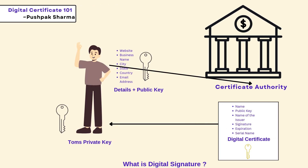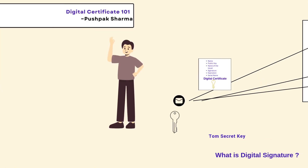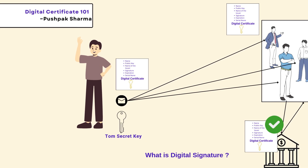Tom obtains a digital certificate by sending information like his IP address and business name to a certificate authority. After verifying the details, the authority issues the digital certificate, which Tom can then send with his email. The digital signature also includes the public key. Just like a passport can be verified through a government portal, a digital signature can be verified through the certificate authority.